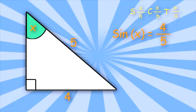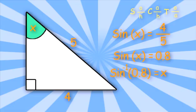4 over 5 equals 0.8. Now we must find the sine inverse of 0.8 to find the value of x. Using our calculator, x is a little over 53 degrees.